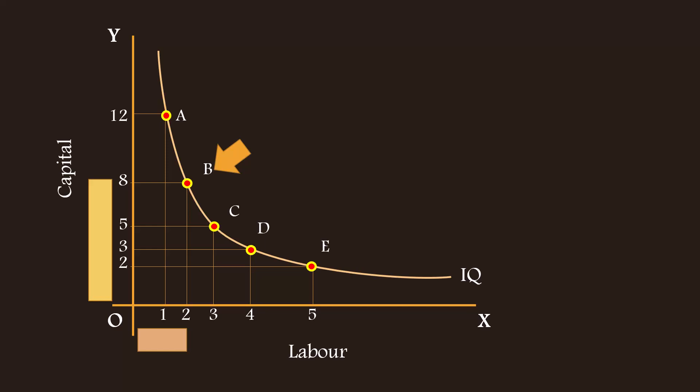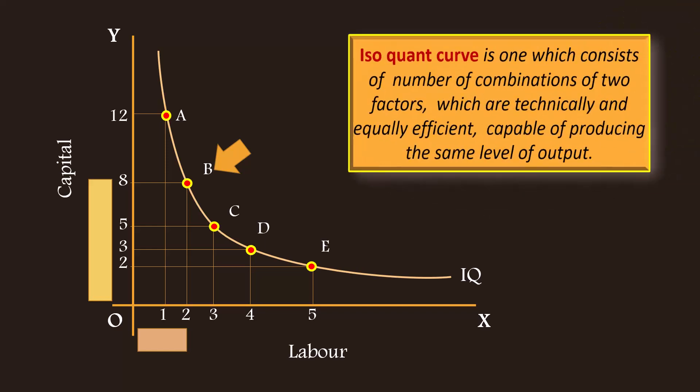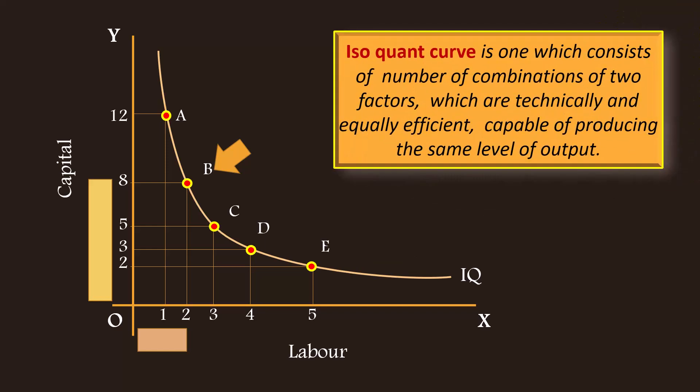At last, we shall understand isoquant curve like this. Isoquant curve is one which consists of number of combinations of two factors which are technically and equally efficient, capable of producing the same level of output.